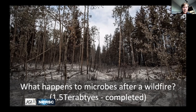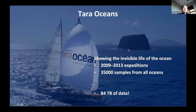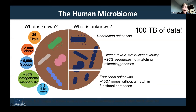Some science questions that come up: What happens to microbes after a wildfire? — that dataset is 1.5 terabytes. How do carbon and metabolism change in freshwater over 17 years? — that's a 26 terabyte dataset. An ocean dataset collected over years has 35,000 samples and 84 terabytes of data, collecting all microbial communities in the ocean. The human microbiome dataset — analyzing most of the known human microbiome data from the sequence archive — is about 100 terabytes.